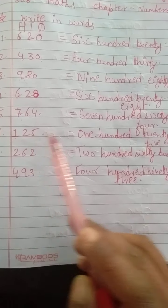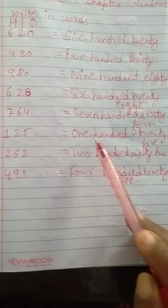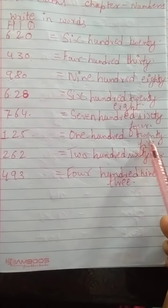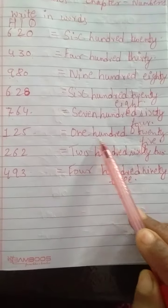Next is 125. O-N-E 1 H-U-N-D-R-E-D 100. T-W-E-N-T-Y 20. F-I-V-E 5. 125.